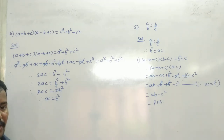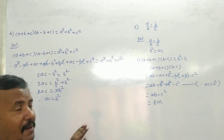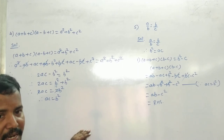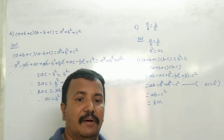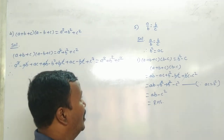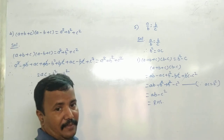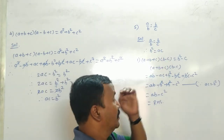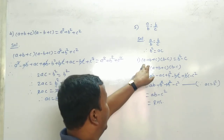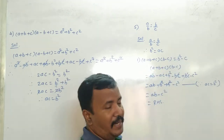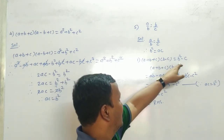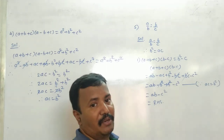Now next, question number 5 में क्या पता है? A upon B is equal to B upon C — already दिया है, 3 numbers are in continued proportion, A upon B is equal to B upon C, and therefore B square is equal to AC. अब यहाँ पर क्या prove करना है: (A + B + C)(B - C) is equal to A square minus B square minus C.